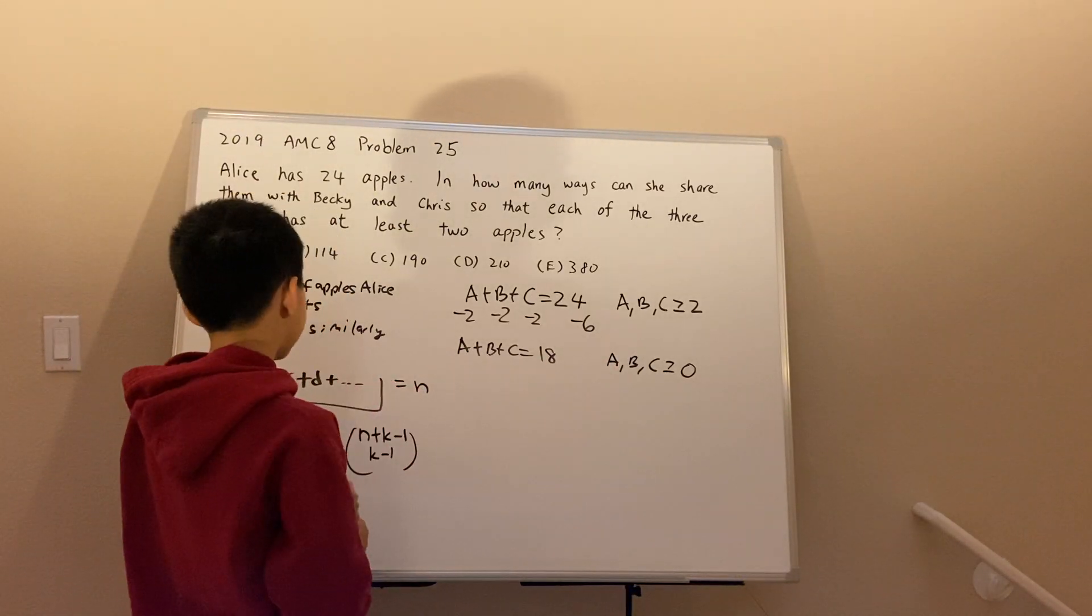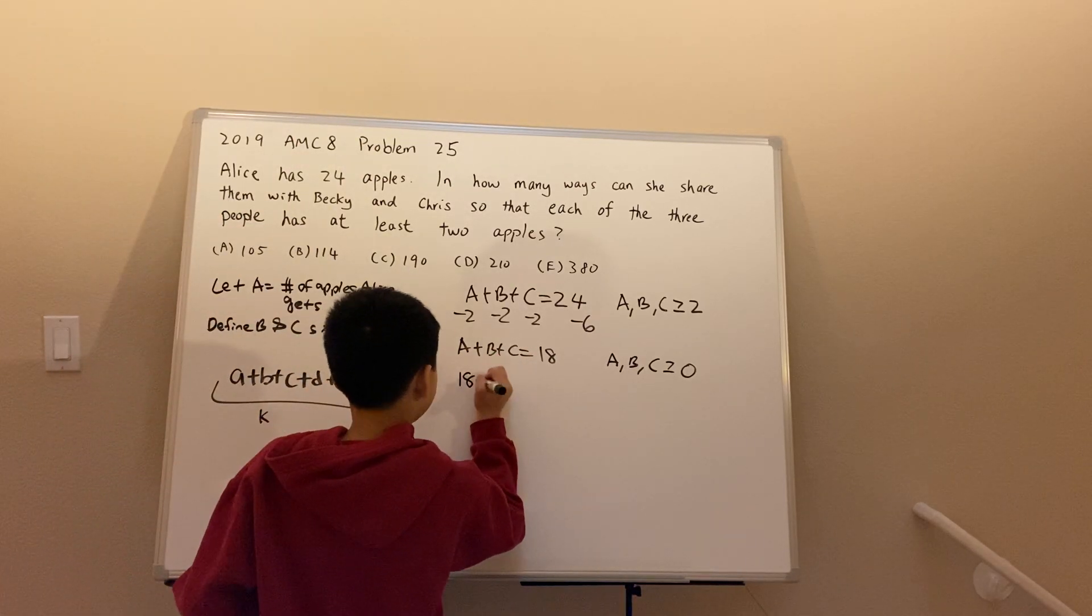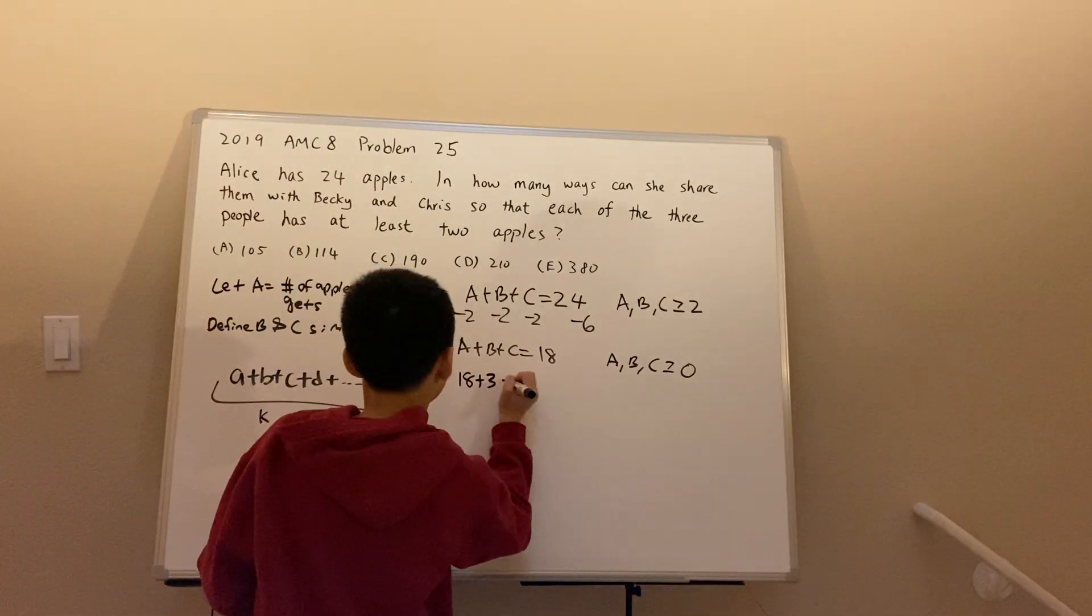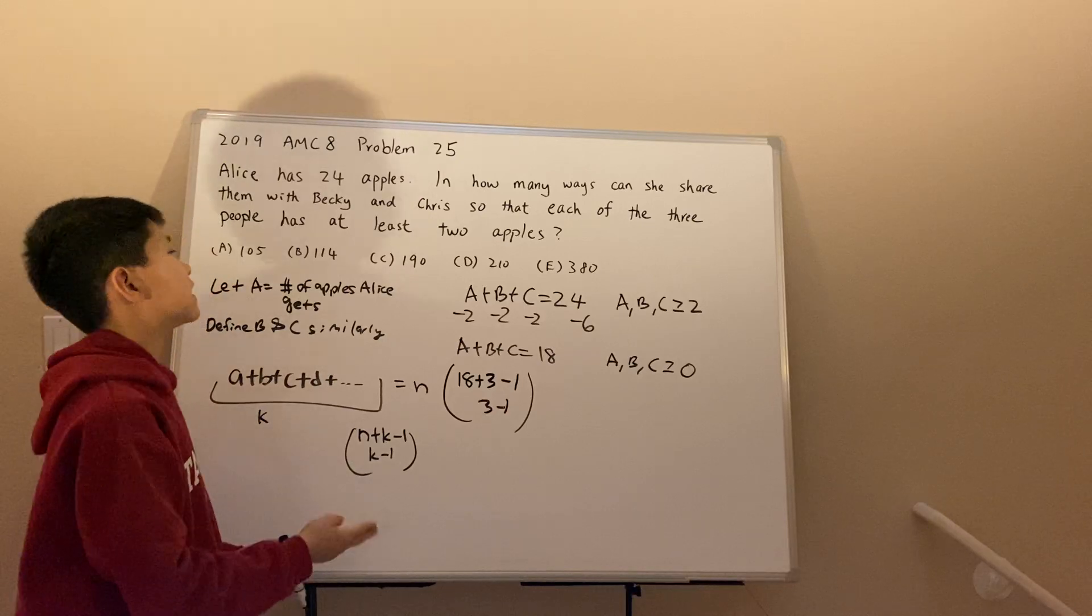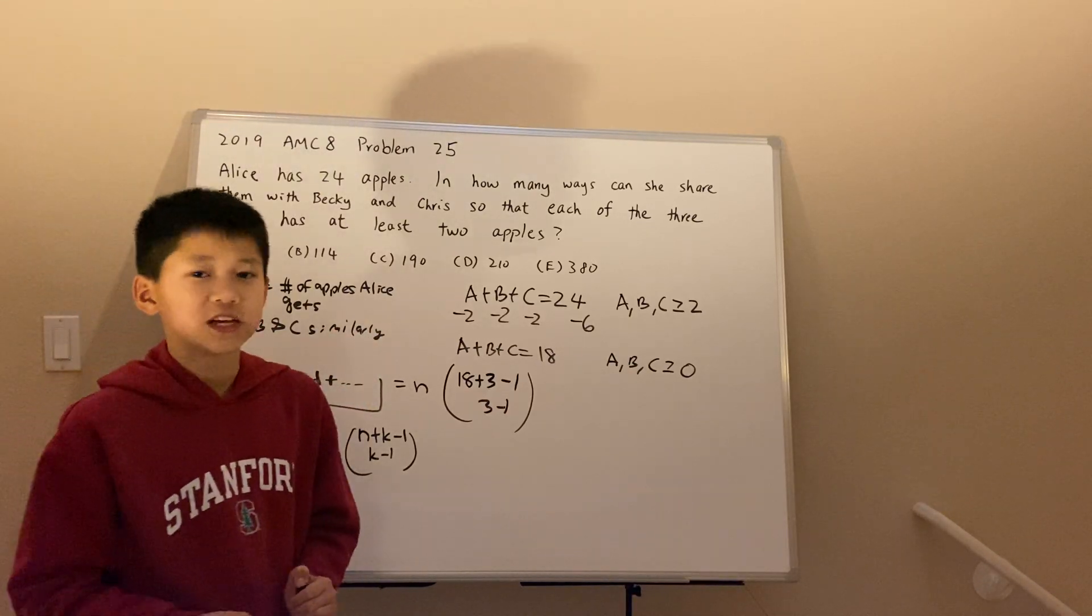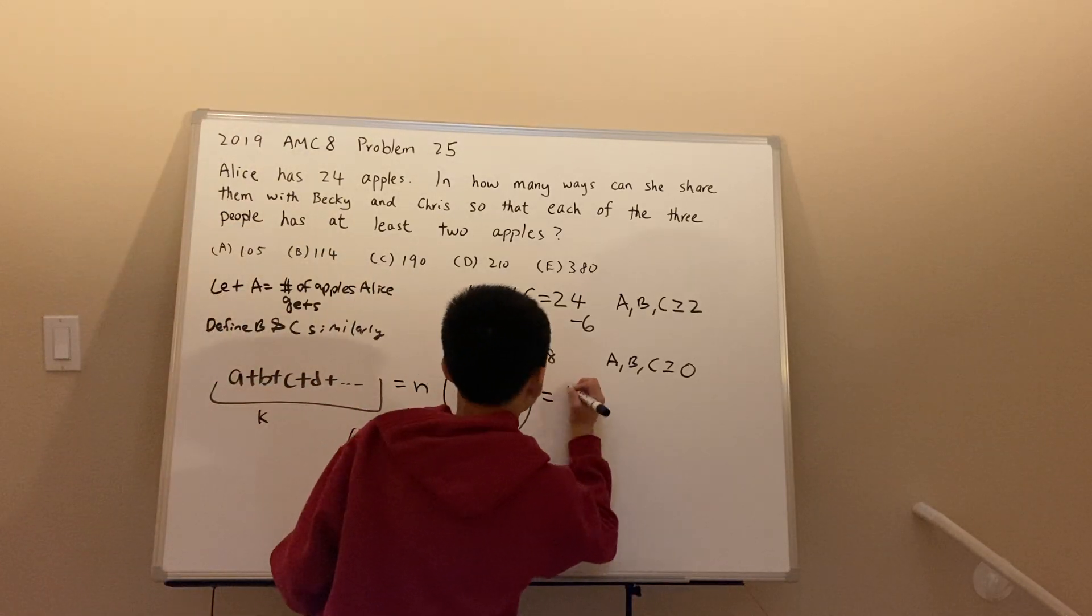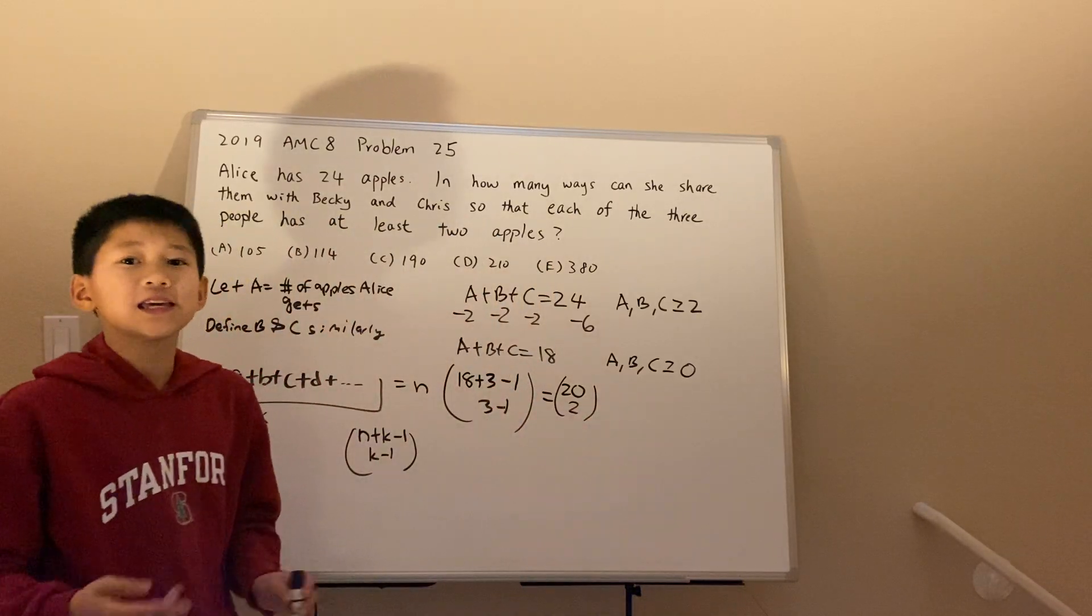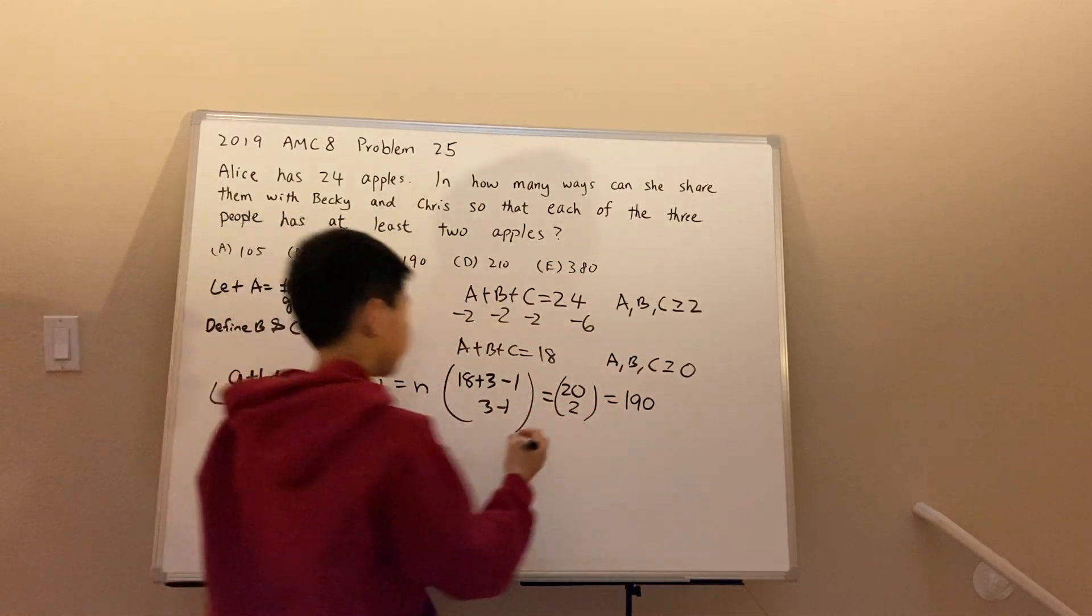In this case, n would be 18. There are three terms, so k is 3. So the number of non-negative solutions to the equation A plus B plus C equals 18 is 21 minus 1 choose 3 minus 1, which is equal to 20 choose 2. And we can easily simplify this to be 190, answer choice C.